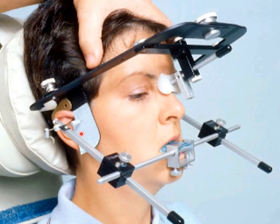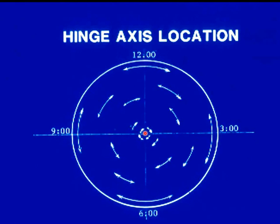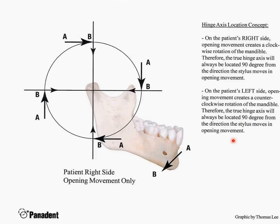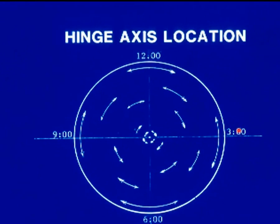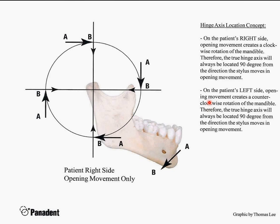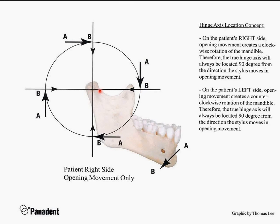Here's a trick I developed for hinge axis location. If you look on the patient's right side and look at opening movement only, the mandible opens in a clockwise rotation. If you concentrate on just the opening movement, watch which direction the stylus moves when the patient opens. If the stylus moves straight down, you're in front of the axis — make a 90-degree right turn toward the axis. It doesn't matter what direction the arrow is going; it's always a 90-degree right-hand turn to the axis. On the patient's left side it's counter-clockwise, so you'd move the stylus 90 degrees to the left.